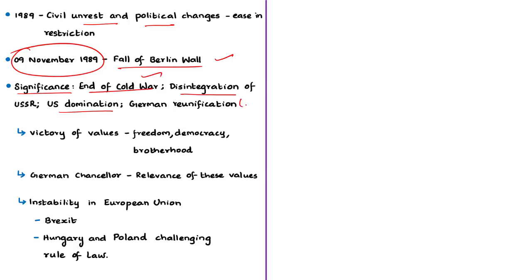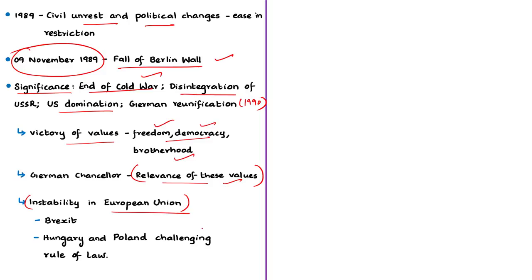The German Chancellor said that the gains achieved by the fall of the Berlin Wall should not be taken for granted. The fall of the wall and German reunification represented victory of values such as freedom of expression, liberation from oppression, democratic values, and common brotherhood. The Chancellor's words are most relevant even today, looked in the context of instability hanging around the European Union — the most successful political-economic international integration — which is starting to decline.